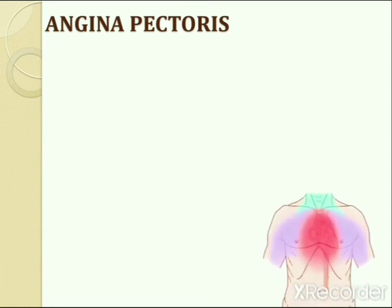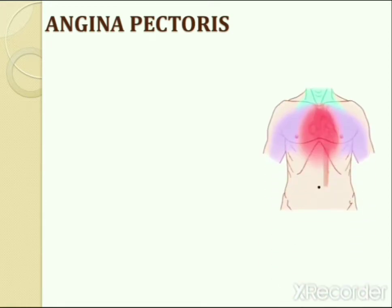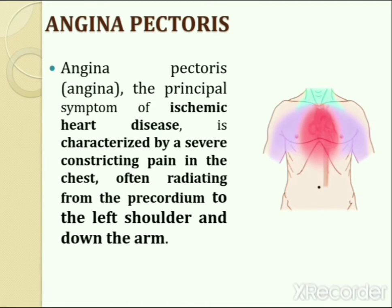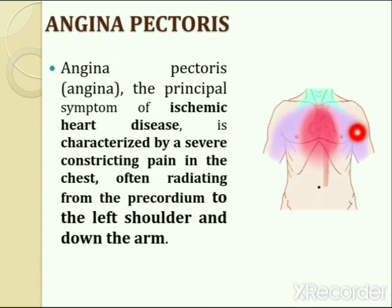Angina pectoris is also known as angina. This is the principal symptom of ischemic heart disease. It is characterized by a severe constricting pain in the chest, often radiating from the precordium to the left shoulder and down the arm. The precordium is the region of the thorax, and pain starts from the precordium, often radiating to the left shoulder and then down the arm.